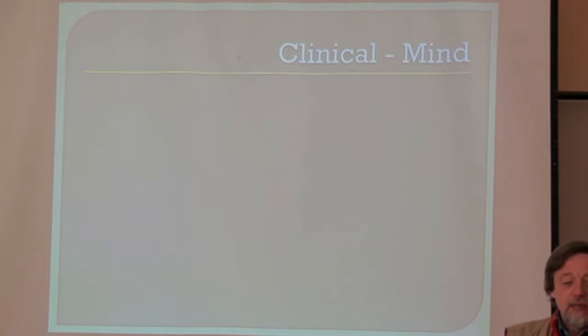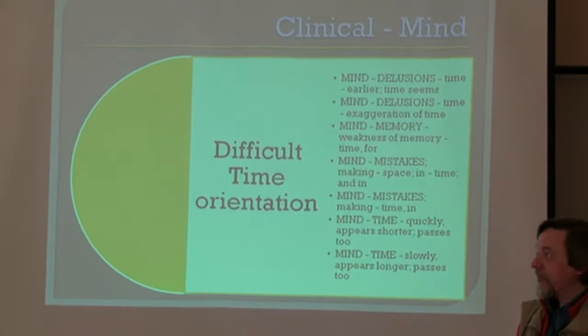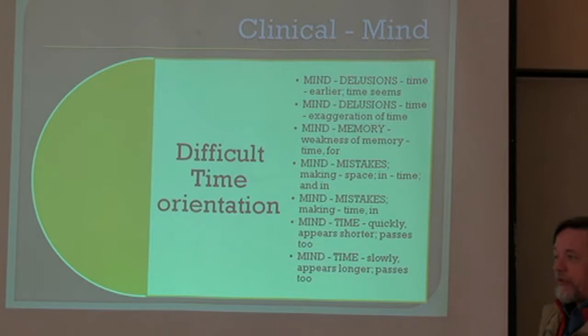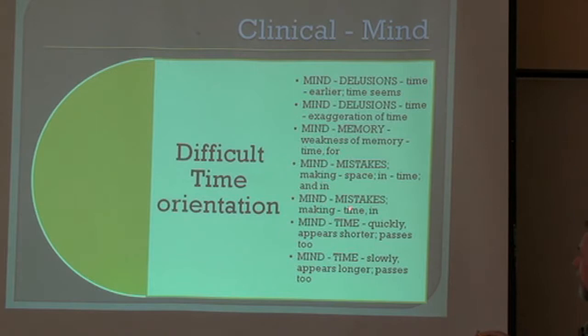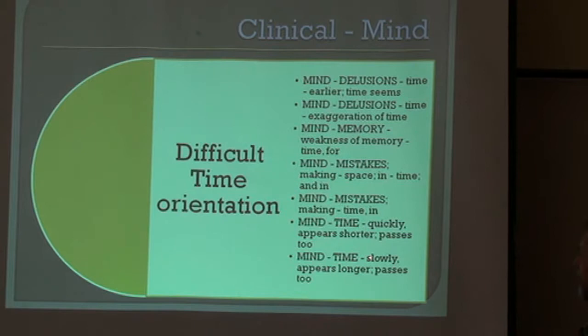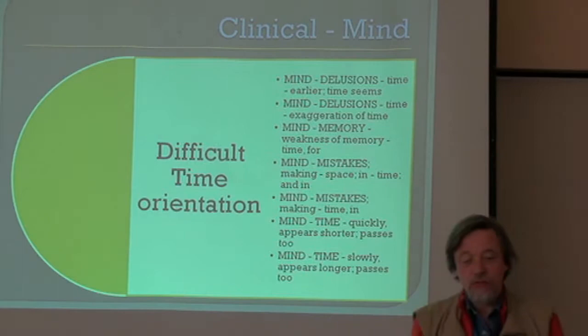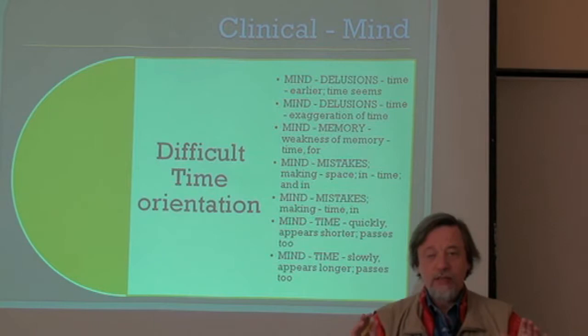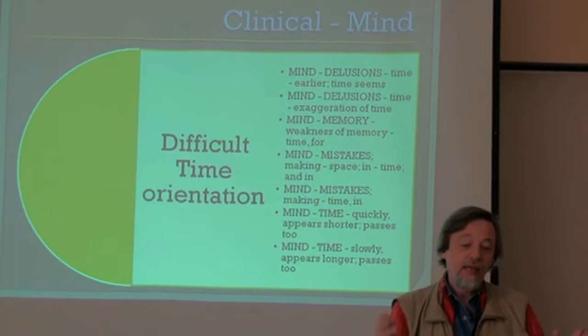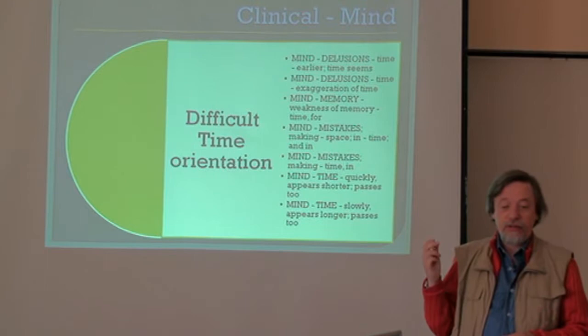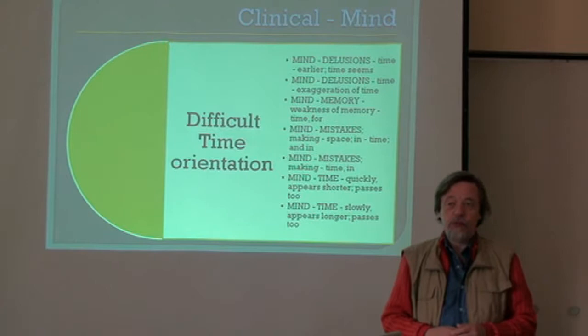For Clinical Mind, I'll give an example: difficult time orientation. You will maybe know straight away the symptom 'makes mistakes in time.' But if you read along the list, you will see there are other symptoms in the repertory under time — too slow or too quick, even in the delusions, even in memory weakness — which relate to a wrong or difficult time orientation. So we have taken those symptoms together and created one rubric, 'difficult time orientation,' with the remedies of these separate symptoms.